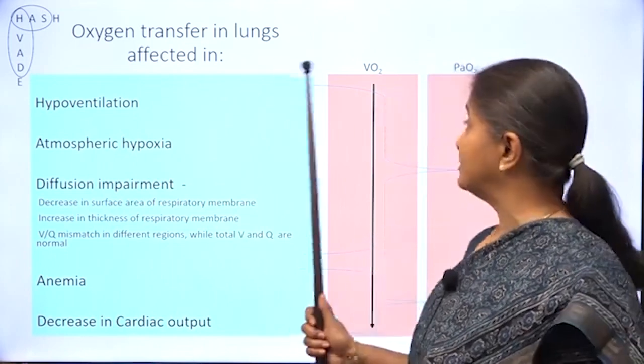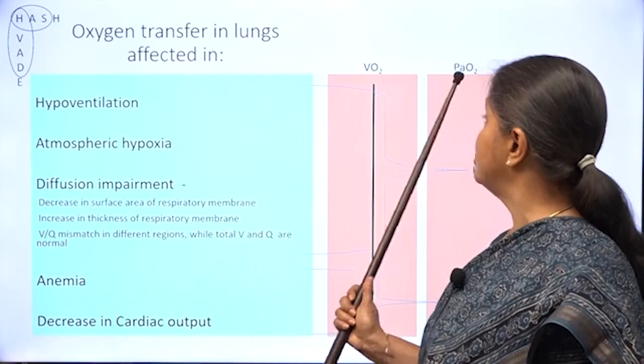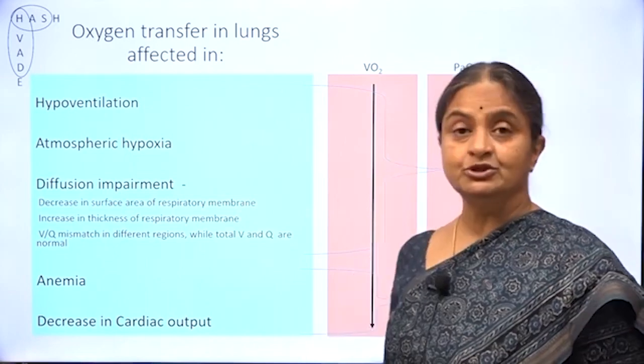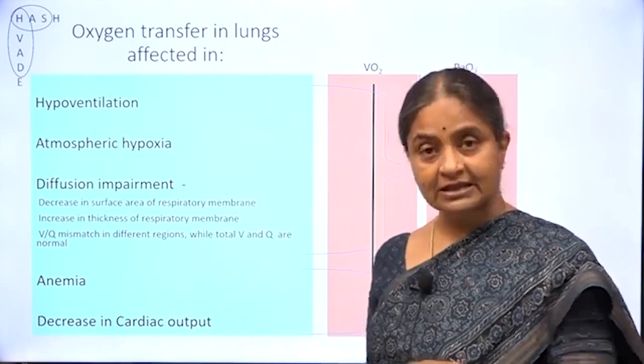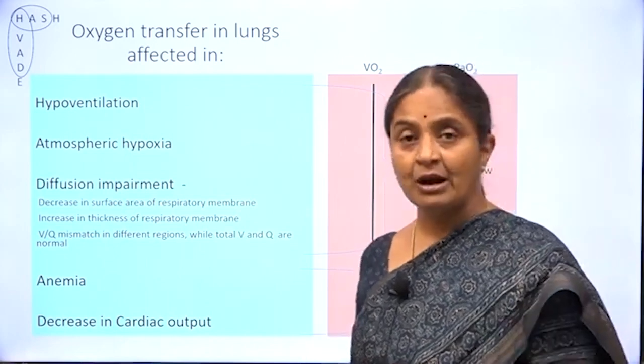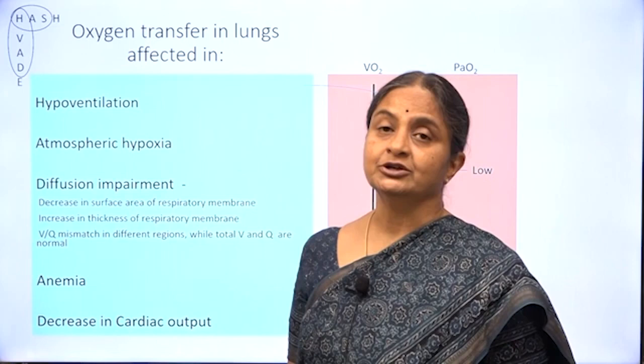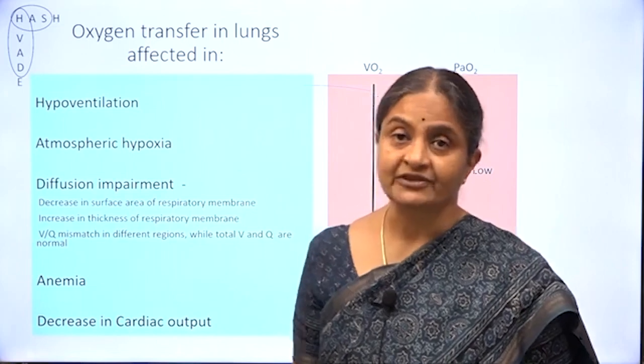We will consider what happens to VCO2 and what happens to arterial PCO2 — that is how we will go about with regard to carbon dioxide diffusion.